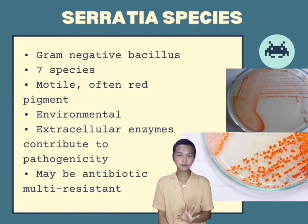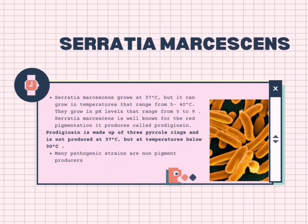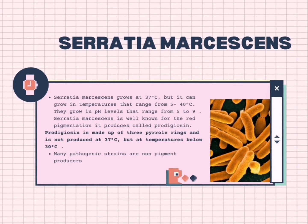These bacteria species can be found in a wide range of environments like soil, water, and plant surfaces. Serratia marcescens grows at 37 degrees Celsius, but it can grow in temperatures that range from 5 to 40 degrees Celsius. They grow in pH levels that range from 5 to 9. Serratia marcescens is well-known for red pigmentation — it produces prodigiosin, which is made of three pyrrole rings and is not produced at 37 degrees Celsius but at temperatures below 30 degrees Celsius.